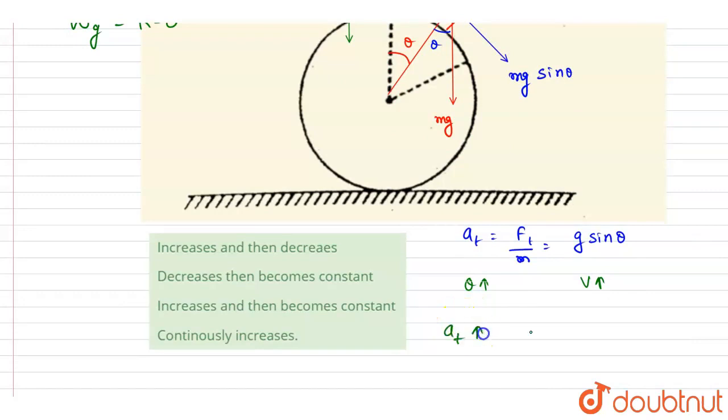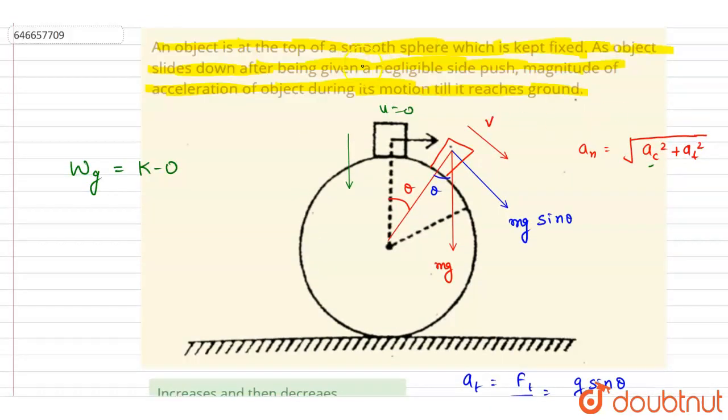So the tangential acceleration is increasing, centripetal is also increasing because with time both are increasing. So the net acceleration will also increase. But here in the question, it is asked that till it reaches the ground.